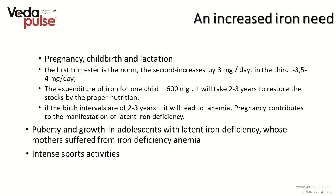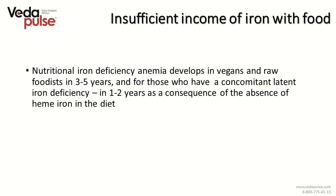Another period of increased iron need is puberty and growth in adolescents with latent iron deficiency whose mothers suffered from iron deficiency anemia. Intense sports activities can also be a cause. 90% of raw eaters and vegans in 3 to 5 years get nutritive iron deficiency anemia. It is not harmful to be a vegetarian following a milk and crops diet, but being a vegan is physiologically dangerous. It makes much more benefit if you do fasting or become a vegan or raw eater for a short period of time and then go back to a physiologically proper diet.